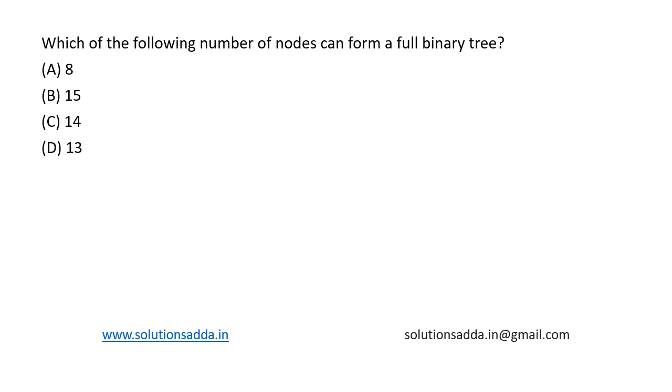This is a question from data structures: which of the following number of nodes can form a full binary tree? A binary tree is said to be a full binary tree in which all the nodes except leaf have two children. So this is the basic criteria for a binary tree to be fully binary.